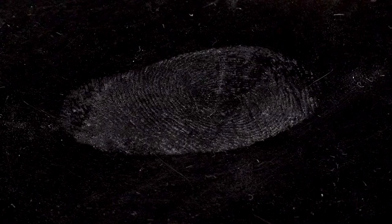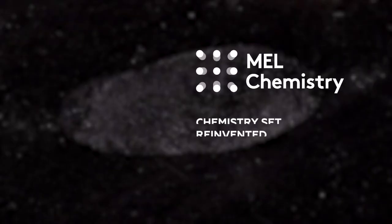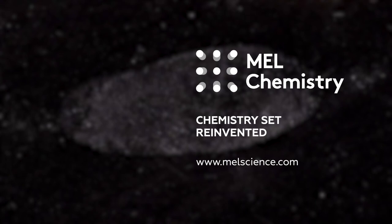Superglue is made of cyanoacrylates, which are readily absorbed by the oily residue in a fingerprint. The water reacts with this and solidifies the shape of the fingerprint on the surface of the Petri dish. Learn more about this experiment on our MEL Science website.